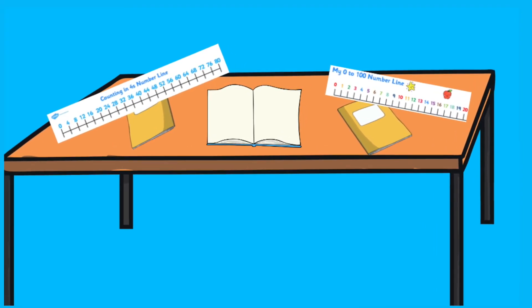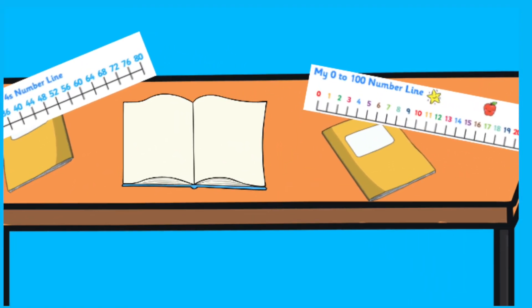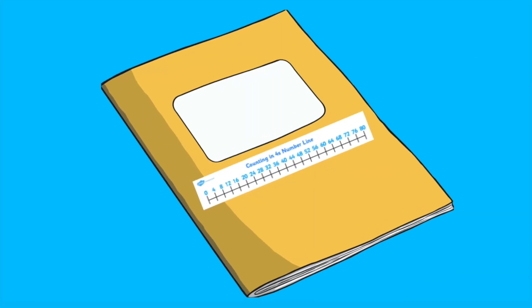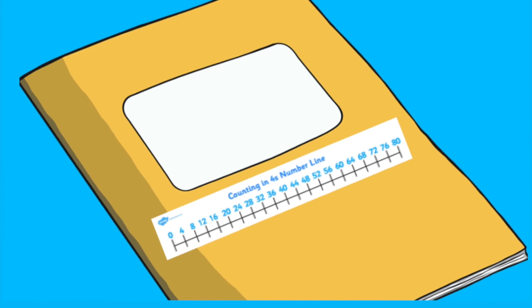Number lines can be printed to support individual lessons. They could be laminated and stuck on tables for reference, or you could stick them on the front of a maths book as a quick and easy reference when counting.